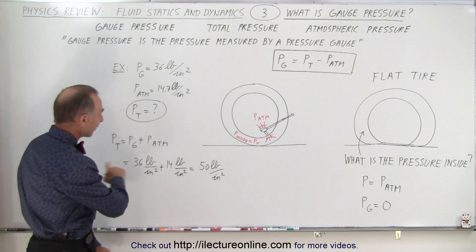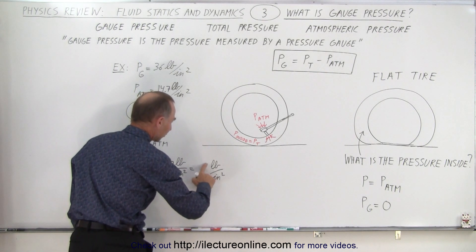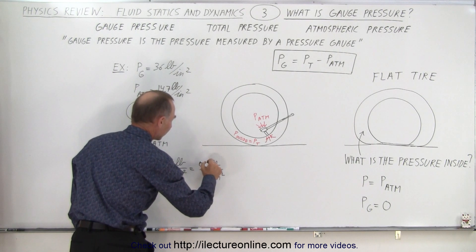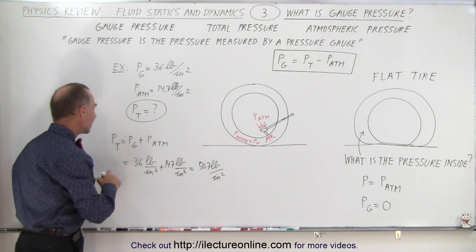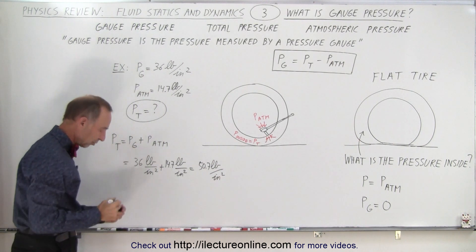Well then we have to add them together and let me change this as well, so this would be 14.7 and this would then of course be 50.7. You can see that simply to get the total pressure you simply have to add the gauge pressure and the atmospheric pressure together.